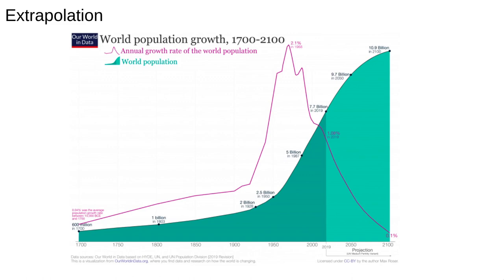This is an example of a good extrapolation. The data up to 2019 is the global population, at that point around 7.7 billion. Over the last 300 years global population has grown exponentially, with the growth rate accelerating in the early 20th century and peaking around 1960, which is what the pink line shows. A naive extrapolation of the historical trend in total population would predict continued exponential growth and a population of many tens of billions by 2100.